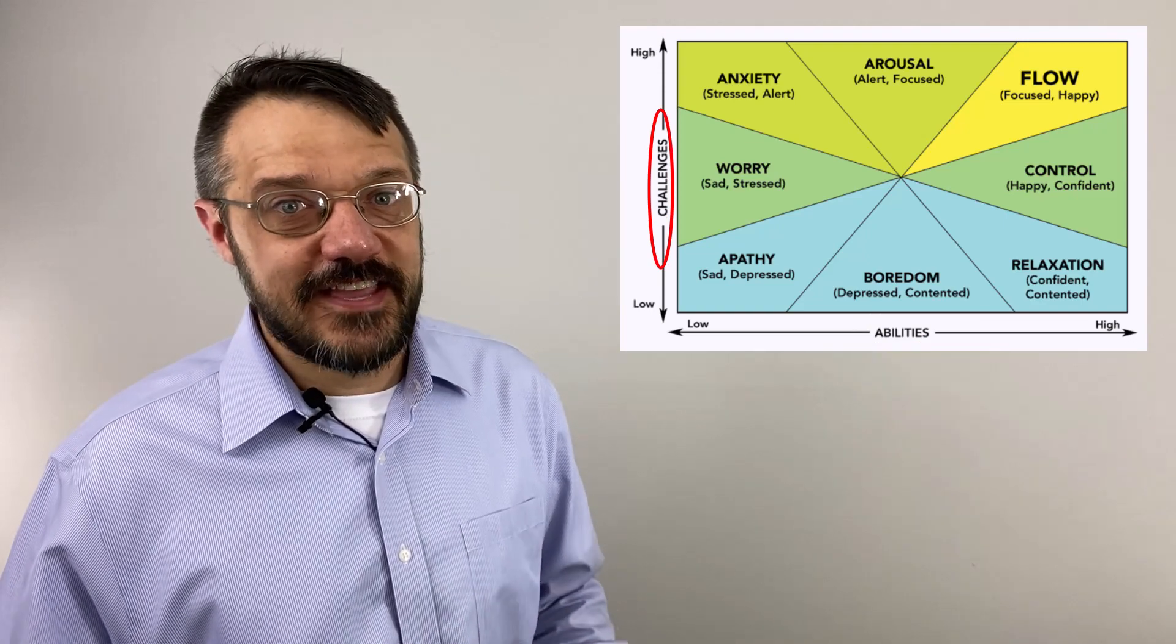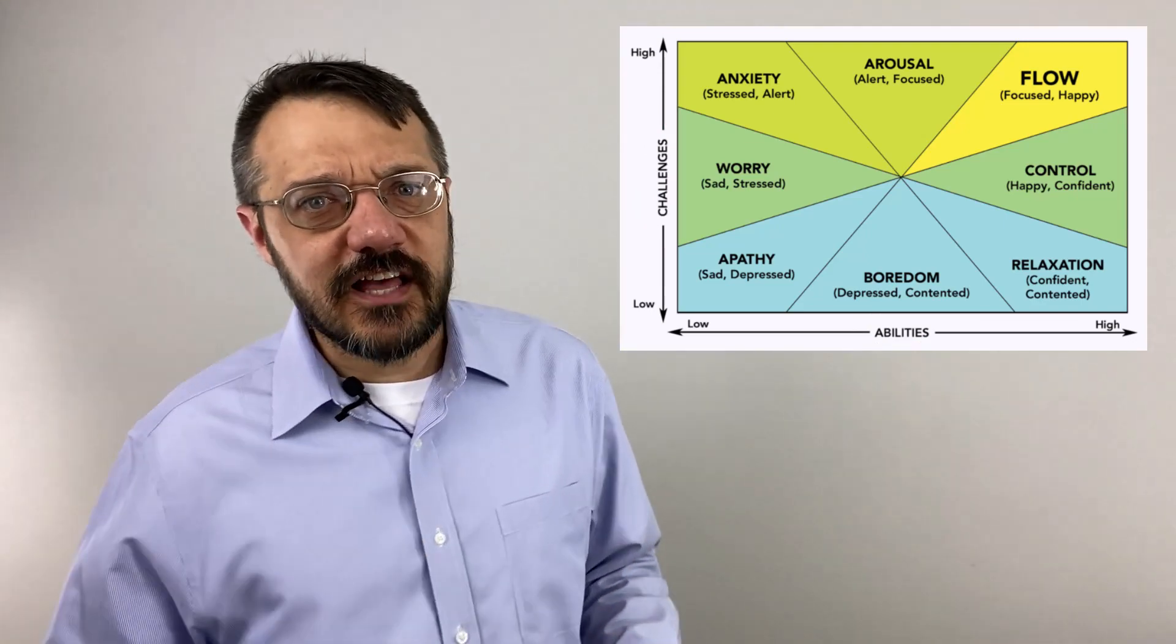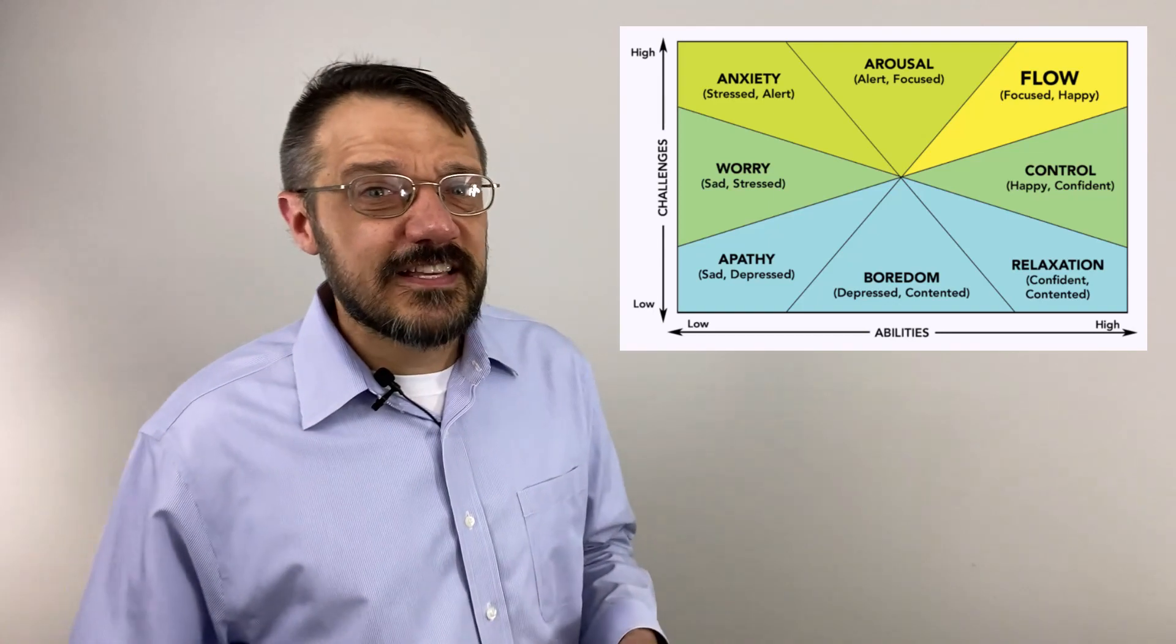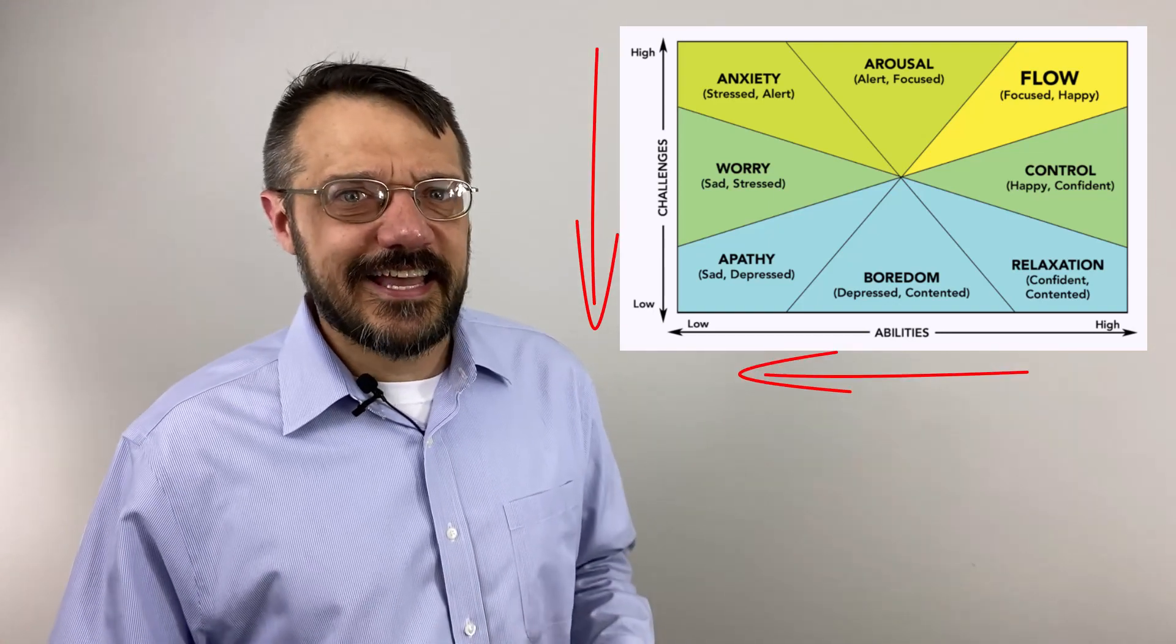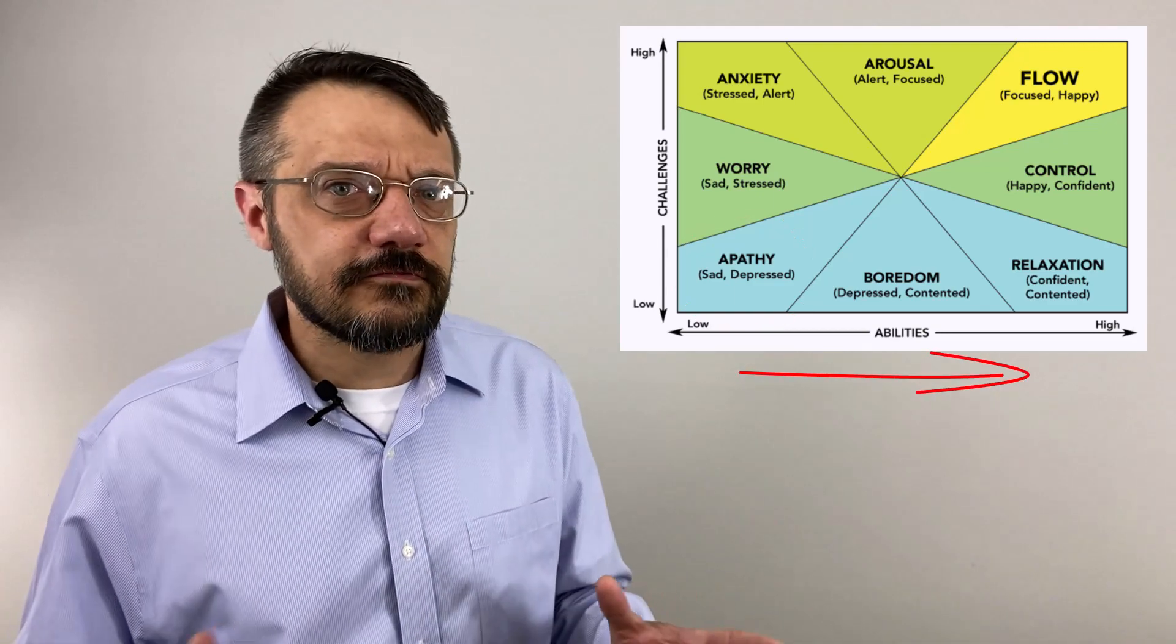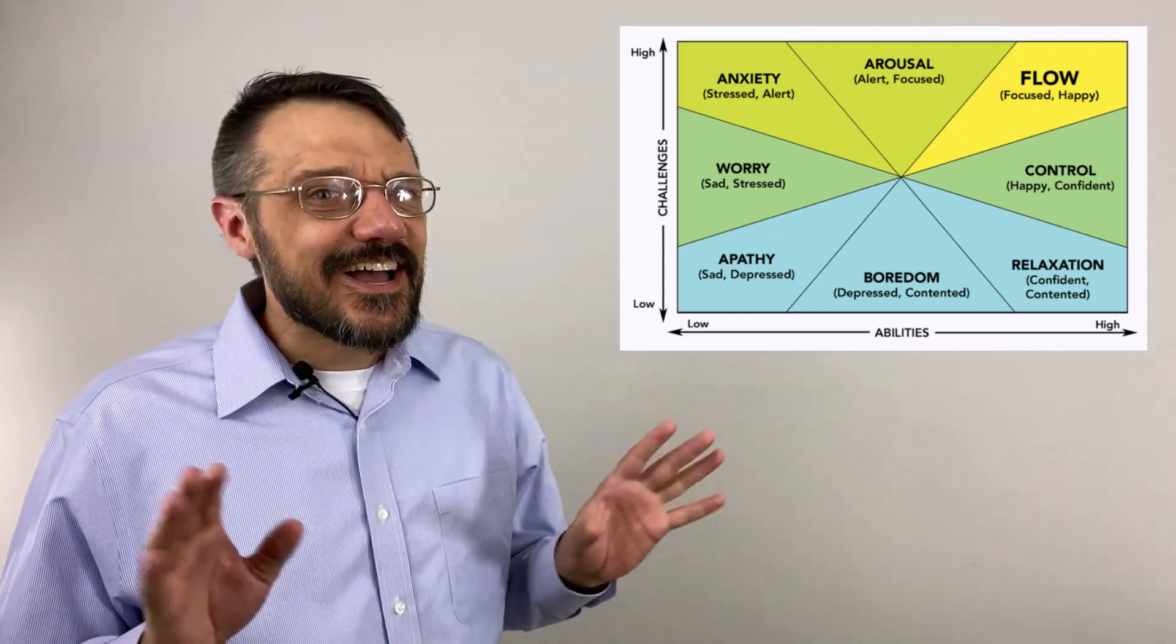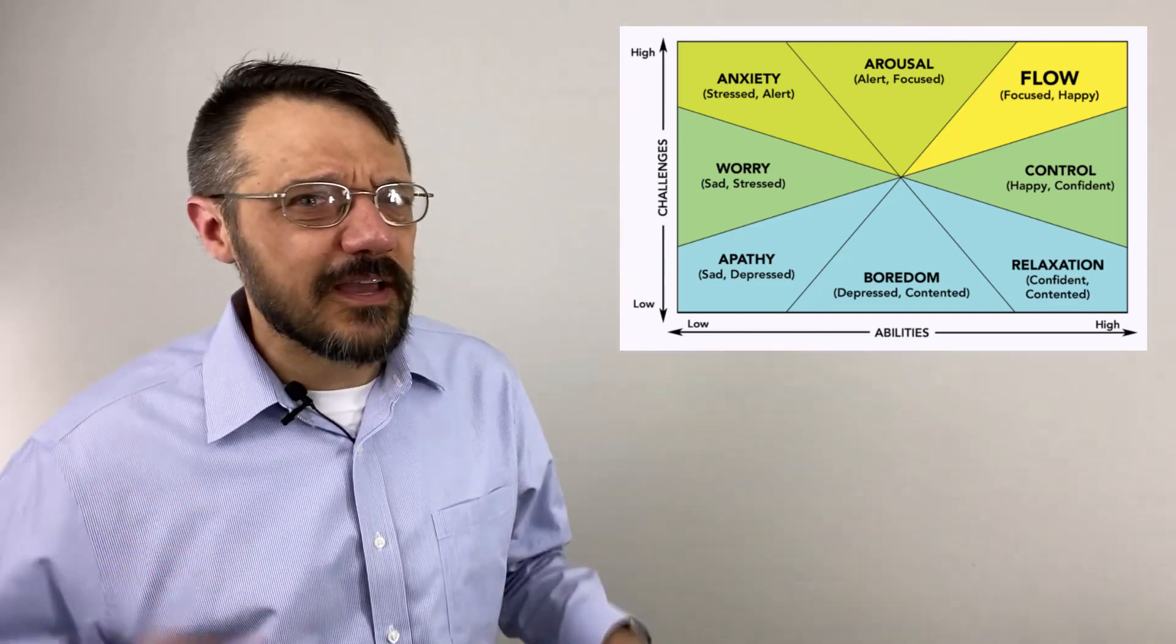There's one popular two-dimensional flow model where the x-axis represents someone's skill level and the y-axis represents the difficulty of the challenge they face. Within this range of skill levels and challenge levels, there's eight different mental states that a person can achieve. For instance, if a task is low challenge and a person is not very skilled at it, they enter a state of apathy. If they have high skill for a moderate challenge, then they have a sense of control.